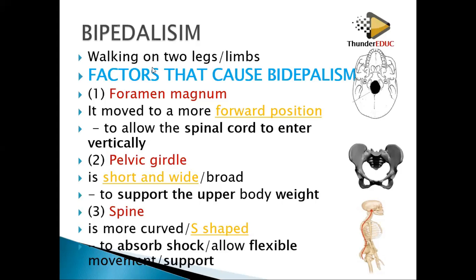So the factors that caused bipedalism: position of foramen magnum — you have to explain what it is; pelvis — short and wide, you have to explain that; and the spine — S-shaped. Bipedalism is walking on two limbs. The foramen magnum position, the short and wide pelvis, and the curved spine all contribute.